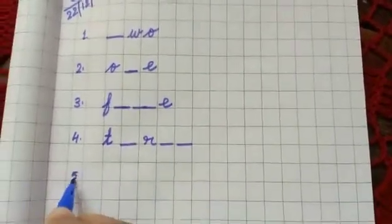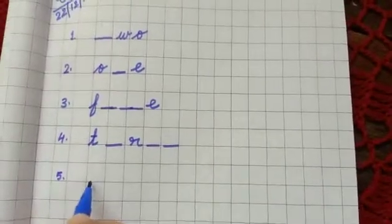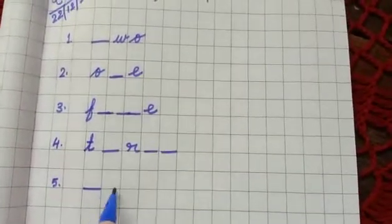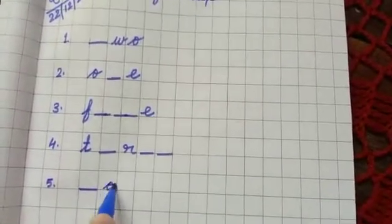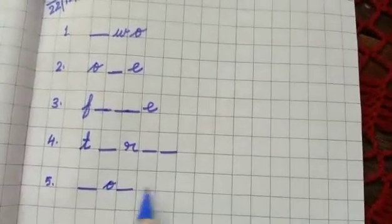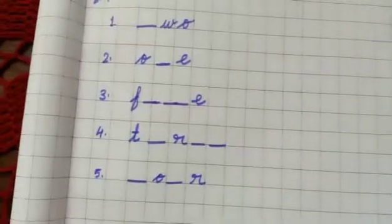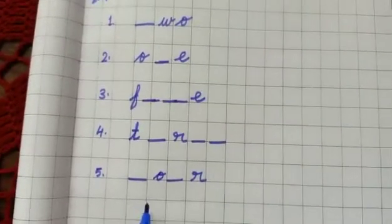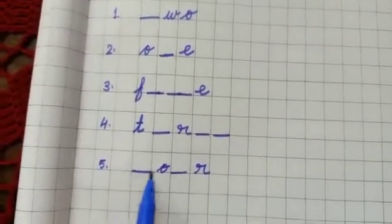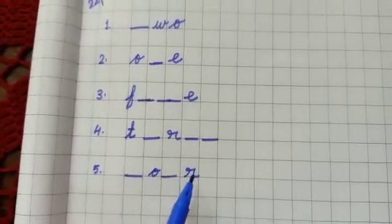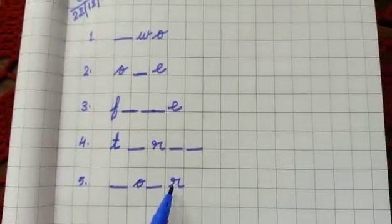Now last. Dash O dash R. So what you will write? Think. You will write 4, F O U R, 4. Okay children.